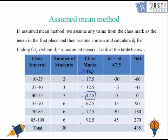Now after selecting the assumed mean we find the di's which are nothing but xi take away the assumed mean. That is 17.5 take away 47.5 that becomes minus 30. Then 32.5 take away 47.5 which is minus 15. Then 47.5 take away 47.5 which is 0. Then 62.5 take away 47.5 would be 15. Likewise 77.5 take away 47.5 would be 30 and 92.5 take away 47.5 will be 45.